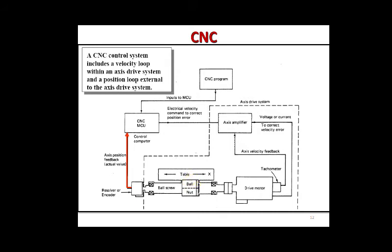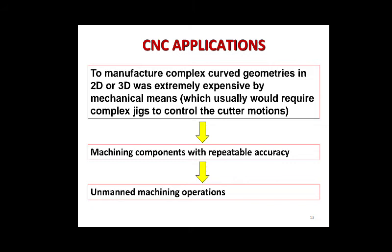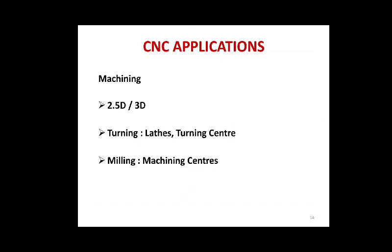The CNC program is sent to the MCU. The MCU sends commands to the axis amplifier. The table's axis position feedback is sent back to the MCU, and the table's axis velocity feedback is sent through a tachometer to the axis amplifier. The voltage from the driver motor is also sent to the axis amplifier. This whole system is the axis drive system.